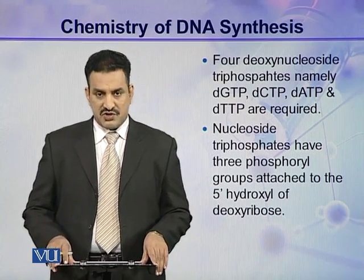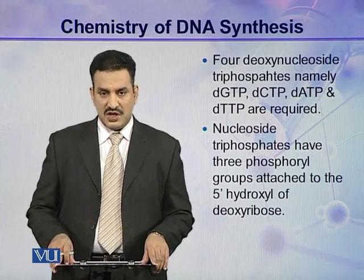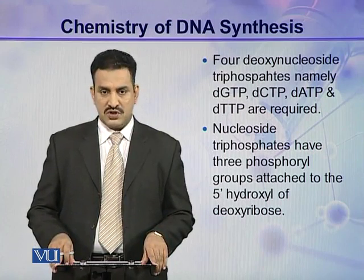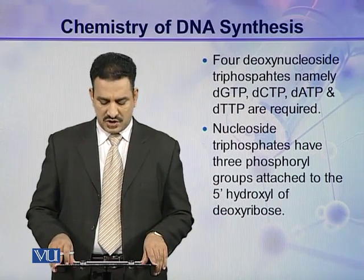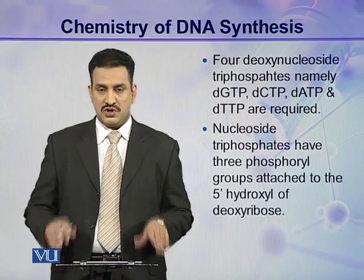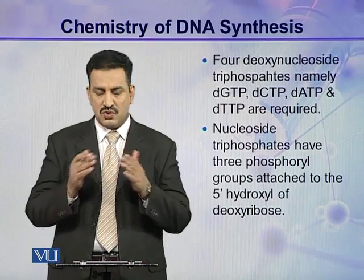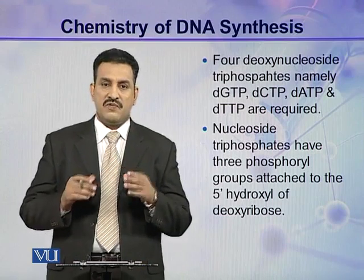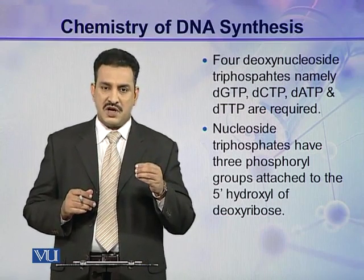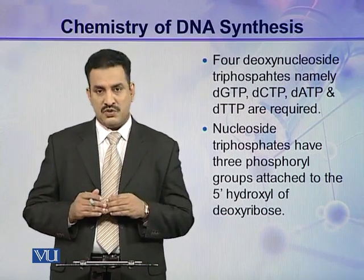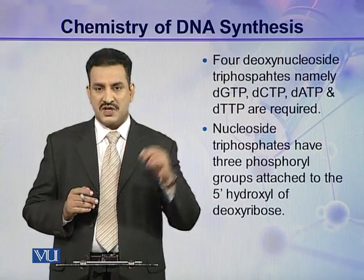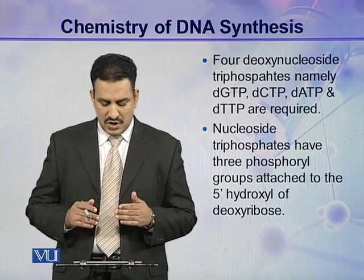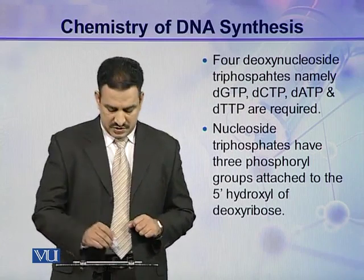The nucleoside triphosphates have three phosphoryl groups attached to the five prime hydroxyl of the deoxyribose. Deoxyribose sugar is present in DNA, and to the five prime carbon of this deoxyribose, three phosphate groups are attached, making it a nucleoside triphosphate.